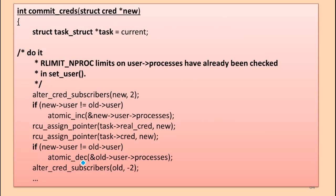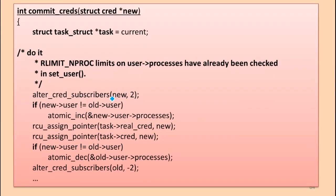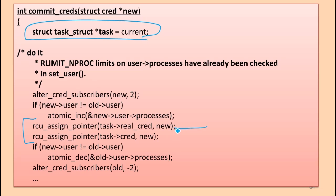If we look at this code, we can see that. We stored in new — inside the new struct — we stored the new ID: that's what we're setting UID to. We call commit_credentials passing new in. In commit_credentials, we have task which is current — current is a global variable that is the current task, the data structure the OS uses to keep track of information about the current task, the one that called setuid. Within the task, there's some field that stores its credentials, and we're assigning new to that field. New is this new struct that has within it the UID that we're doing the setuid to. So this is just changing the value in some data structure — nothing magic going on.